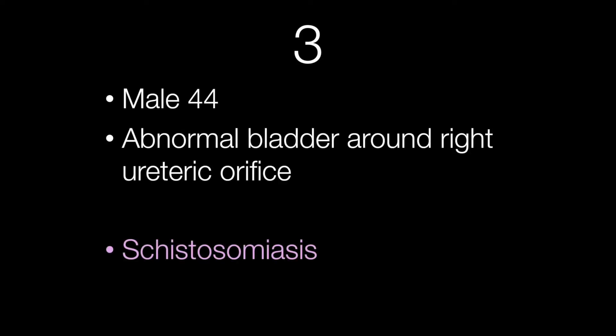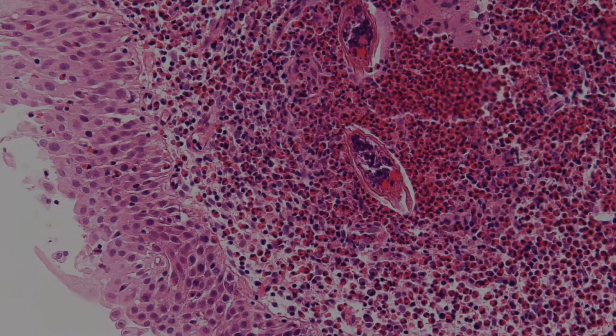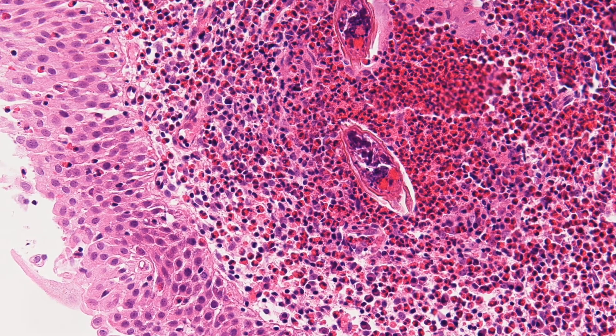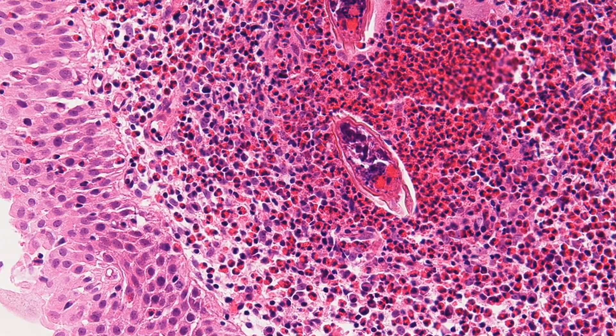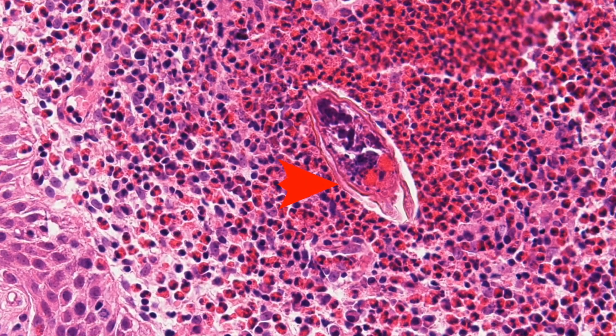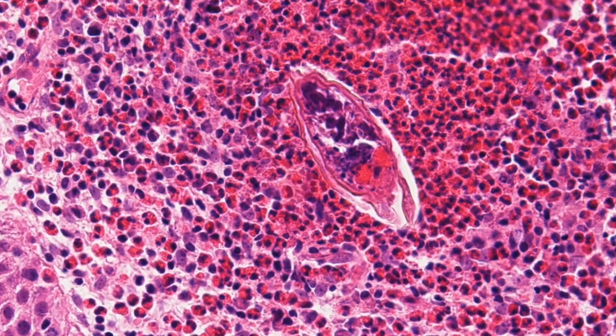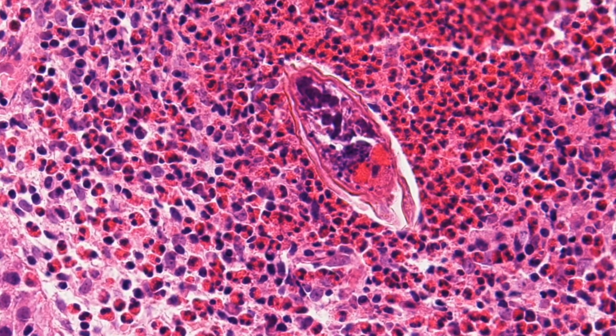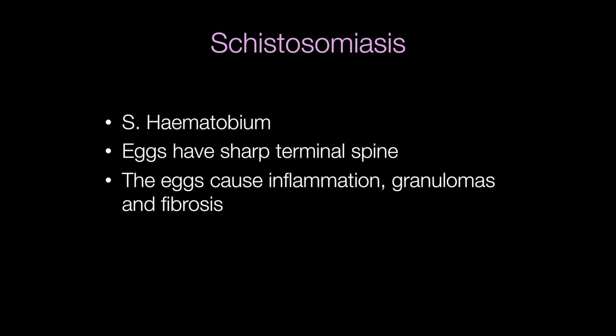This is an example of schistosomiasis. Among the inflammatory cells you can see schistosome eggs, and at the bottom of the egg here is a terminal spine. It is the terminal spine that is classical of Schistosoma haematobium, which causes schistosomiasis in the urinary tract.